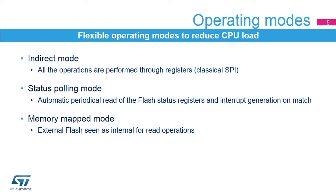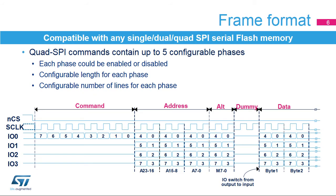The Quad SPI Memory Interface operates in three different modes. Indirect Mode, where it behaves as a classical SPI interface and all operations are performed through registers. Status Polling Mode, where the flash status registers are read periodically with interrupt generation. And Memory Mapped Mode, where the external memory is seen as an internal memory for read operations.